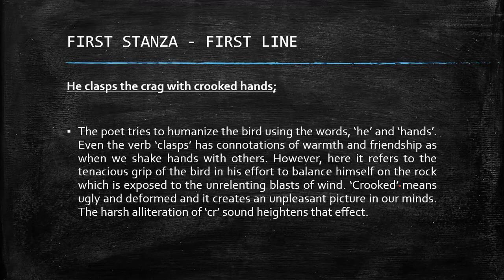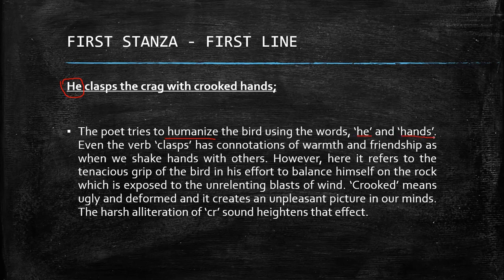We'll start with our first stanza, first line. The poet says: 'He clasps the crag with crooked hands.' The poet starts with the word 'he,' using the technique personification — giving human traits to non-human objects. The poet tries to humanize the bird using words like 'he' and 'hands.' This personification gives the idea that the eagle seems much more important than just an ordinary bird. The word 'clasp' also has a connotation of warmth and friendship, as when we shake hands with others.